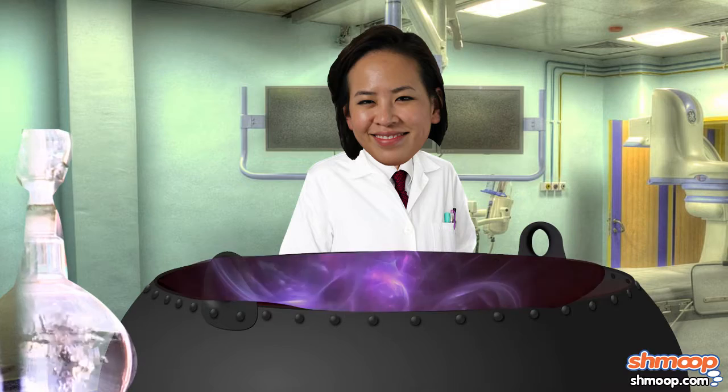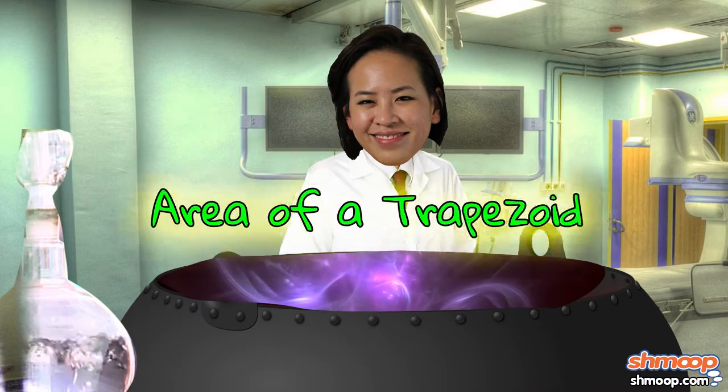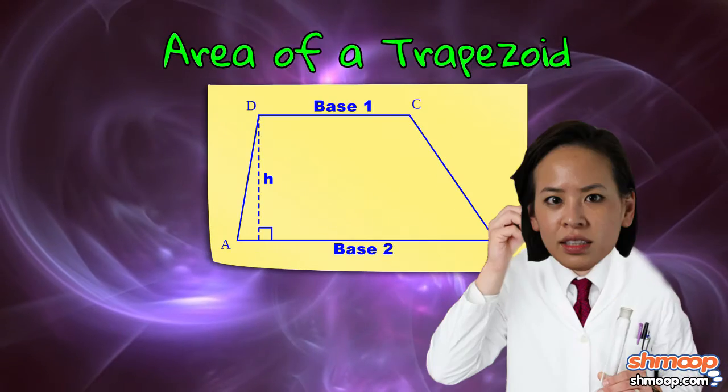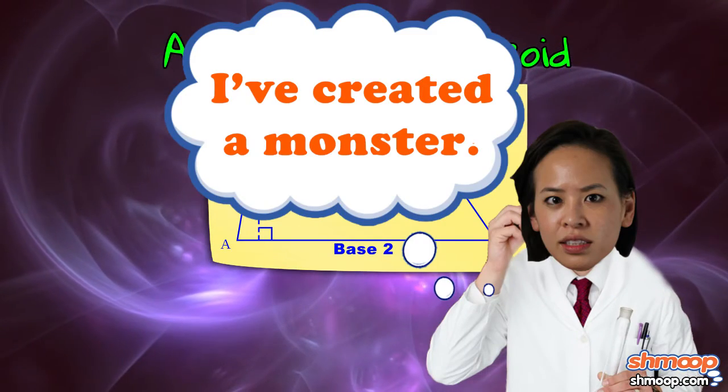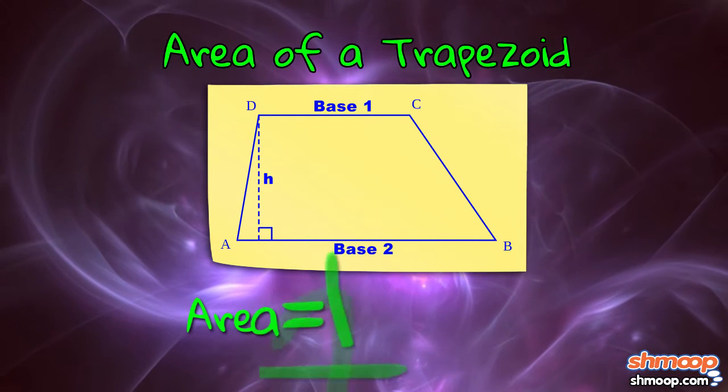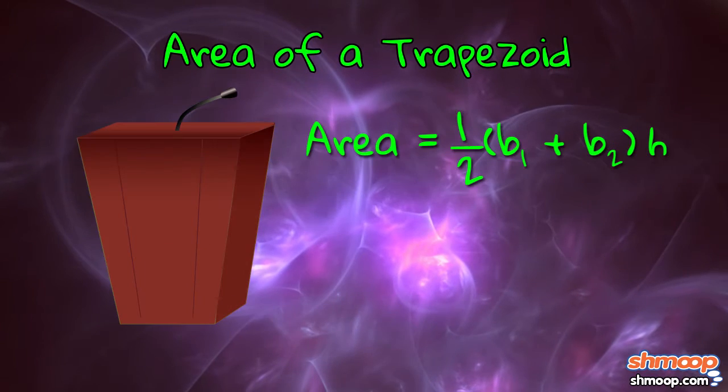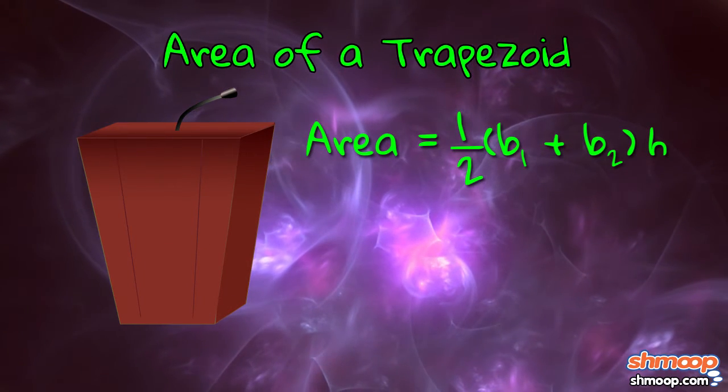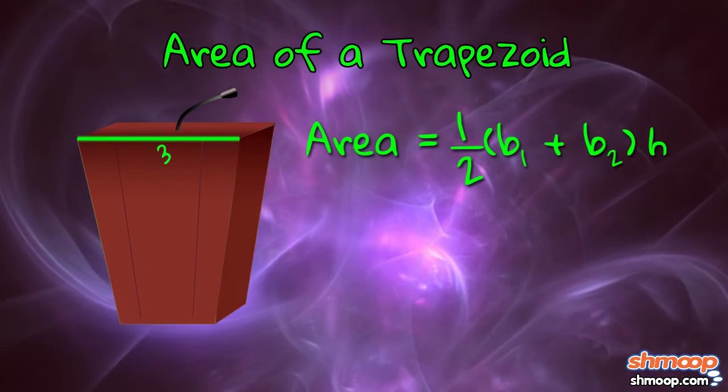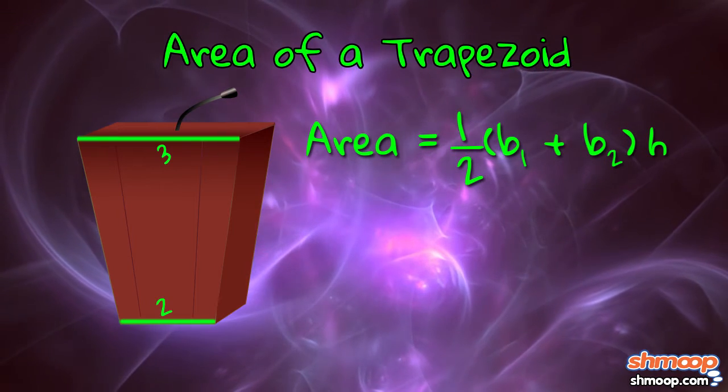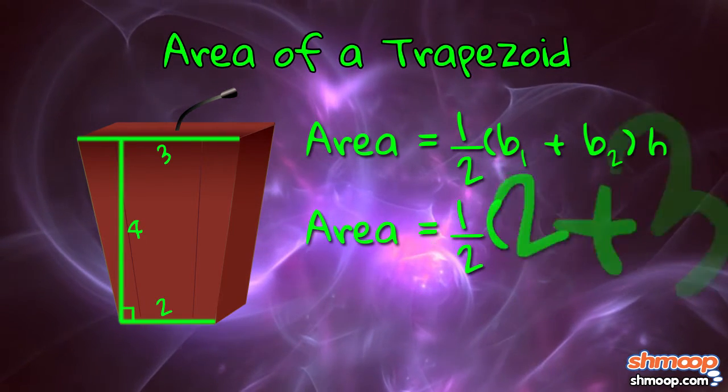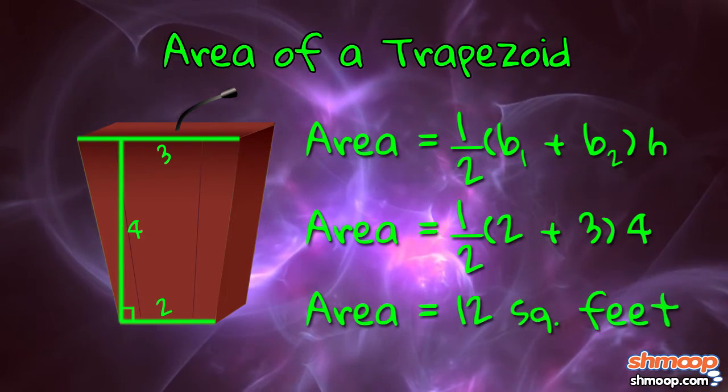Oh, I plumb near forgot about the trapezoid formula. So beautifully and infuriatingly complex. One half times the sum of base 1 plus base 2 times the height. So this podium for instance. The larger base is 3 feet, the smaller base is 2 feet, and the height is 4 feet. And we get an area of 12 square feet.